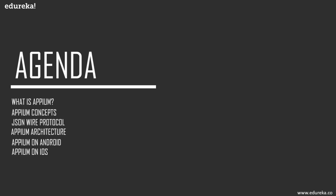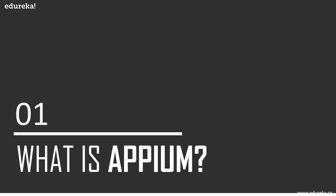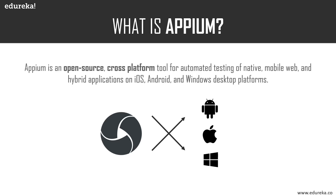Before we dive deep into the architecture of Appium, let me provide a brief introduction to Appium for viewers who have ended up on this video as their first Appium video. Appium is an open source cross-platform automation testing tool, currently geared towards providing a seamless automation testing experience for mobile applications running on Android and iOS. Appium is a server written using Node.js. A few years back, Appium was a command line interface only tool installed using NPM, but the developer team has since released a GUI-based desktop application installable across Linux, Windows, and Mac OS X.